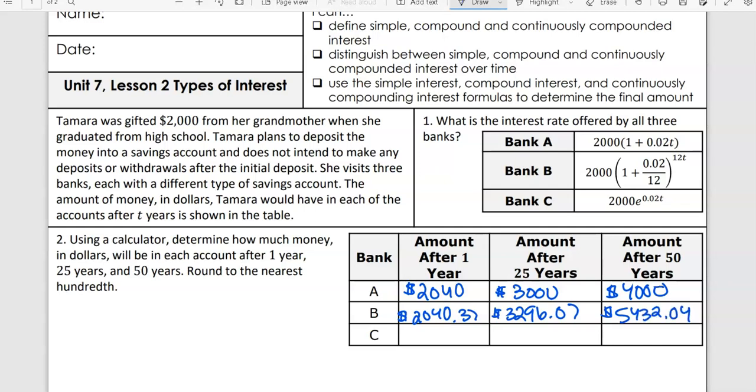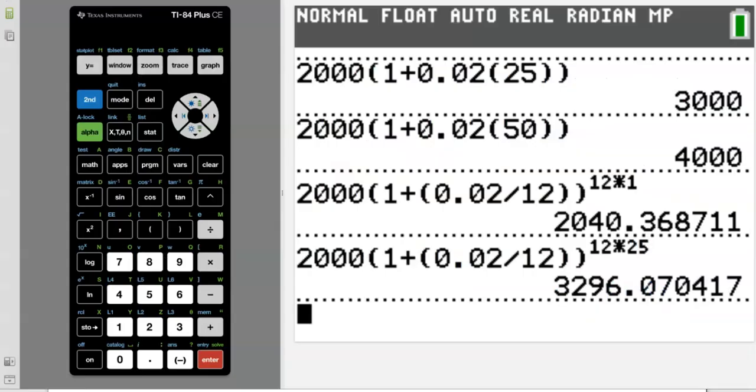What did y'all get for 50 years? 5432 and 4 cents. So far, which bank do you like better? So far I like B. I'm definitely getting more money along the way, right? So far B is nice.